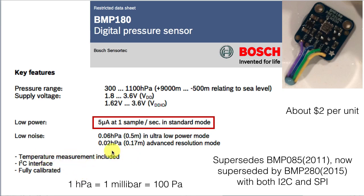The BMP-180 includes temperature measurements, has an I2C interface to communicate back to the microcontroller, and supersedes the older BMP-085. It has itself been superseded by the BMP-280, which supports both I2C and SPI communications — and that's probably what you'll find in phones from 2016 or later.